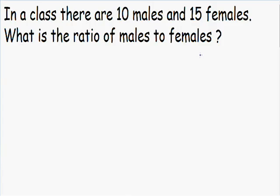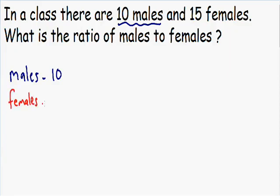Let's start off by writing down the total number of males and females. From what's given to us in this problem, there are 10 males in the classroom, so we have 10 males. And we're told there are 15 females in this classroom, so we have 15 females. We need to find the ratio of males to females — notice the order: males come first and females come second.